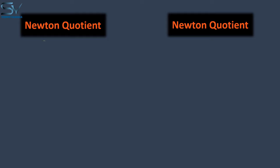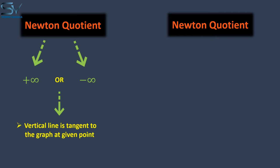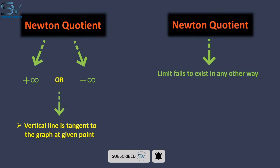Let's see what we got as a final result. If the Newton quotient at any point is positive or negative infinity, the vertical line at that point will be tangent to the curve. The second case is if the limit does not exist in any other way. We know that limit does not exist in the first case as well, but we are talking about if it is not existing in any other way.